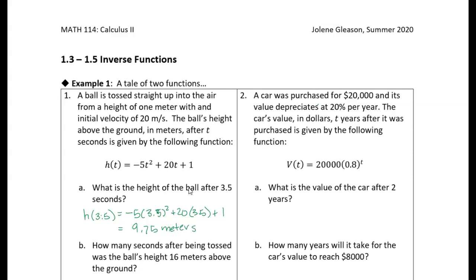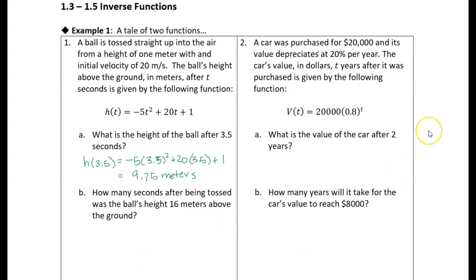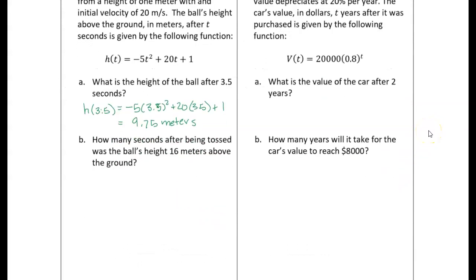The second question is asking how many seconds after being tossed was the ball's height 16 meters. Instead of being given the input t, we're given the output — the height. So we know the height is 16 and we need to find a t value, or possibly more than one t value, that satisfies the equation: 16 = -5t² + 20t + 1.